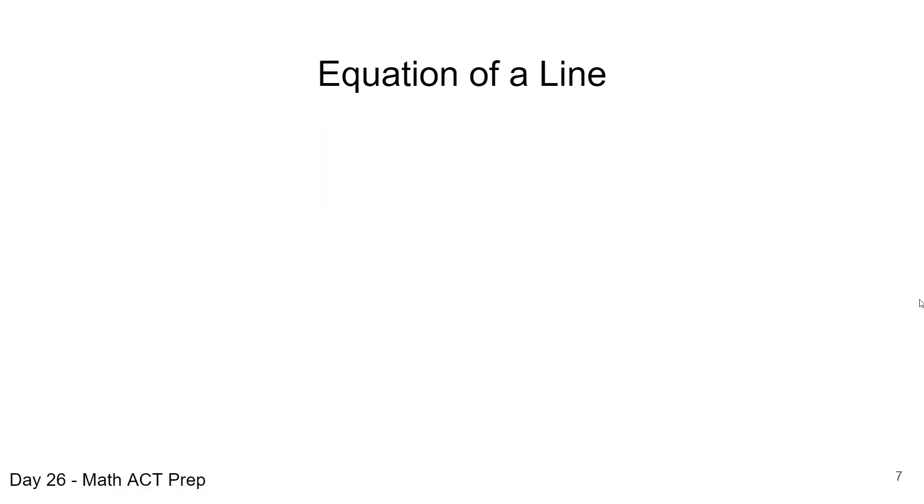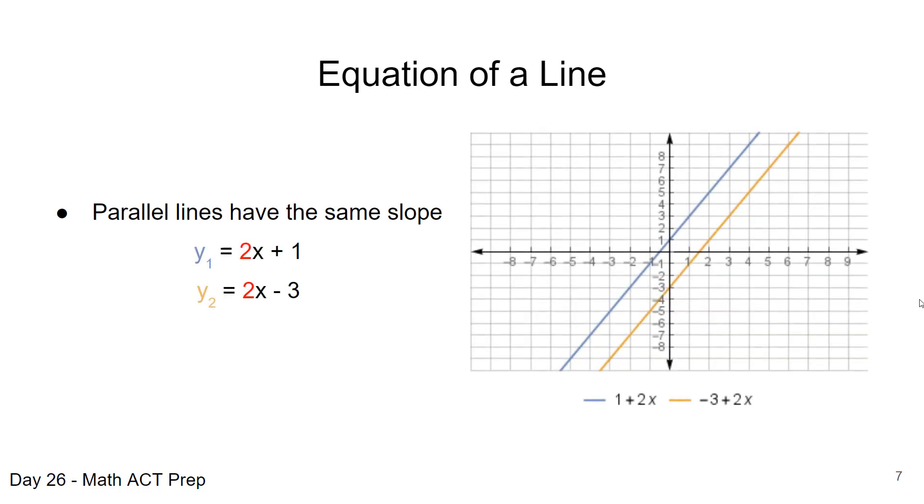So we can take a look at a couple of properties of different types of lines. If you'll remember that parallel lines never cross, they also have the same slope. So when we're looking at the equations of the lines here in this coordinate plane, the light blue line is represented by 2x plus 1, and the yellow line is 2x minus 3.